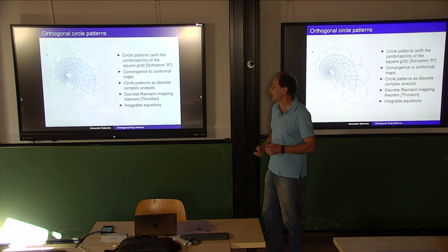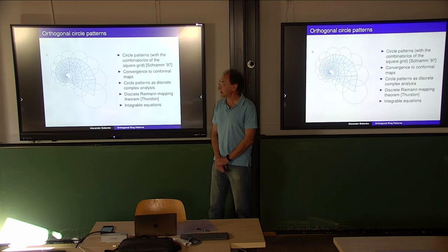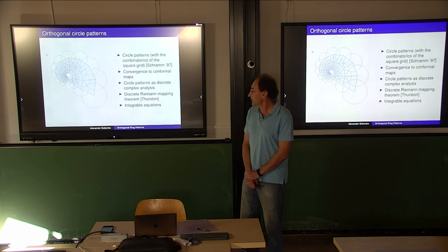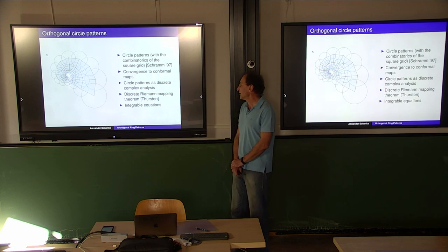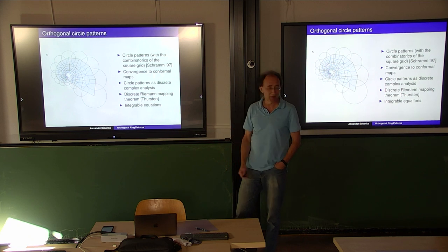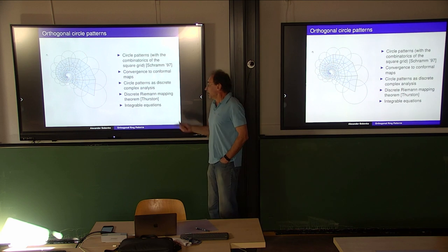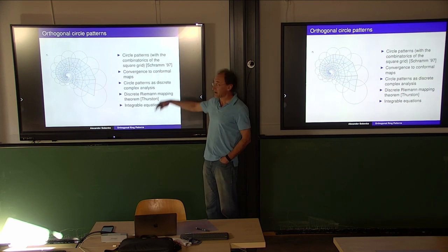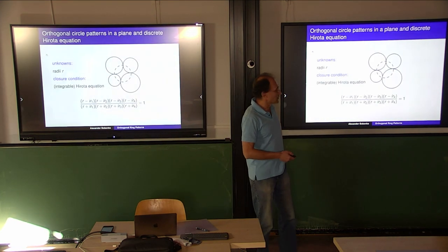One of the important points is that you have convergence to conformal maps, and this builds a bridge to complex analysis. In a way it's a conformal theory. More generally, circle patterns - not necessarily with orthogonal intersection but more general - are treated nowadays as a version of discrete complex analysis. One highlight of this theory was a discrete Riemann mapping theorem, which is essentially by Thurston. And what is very important for this conference: everything is related to integrable equations.